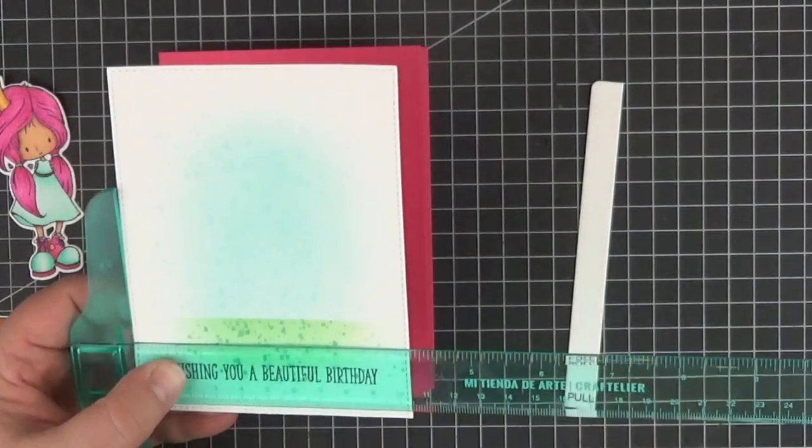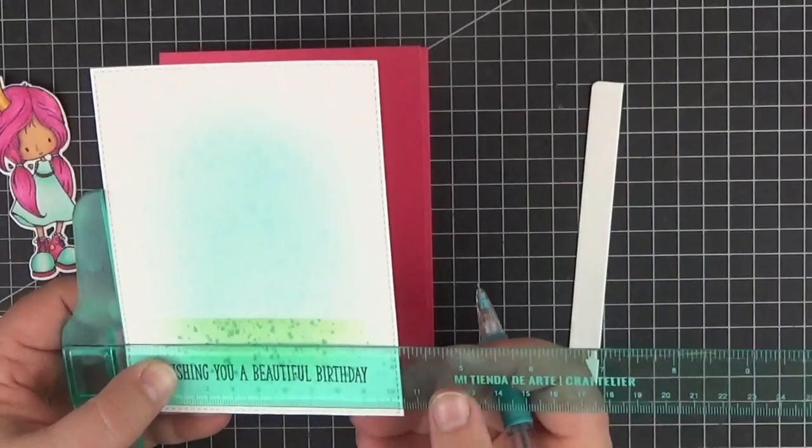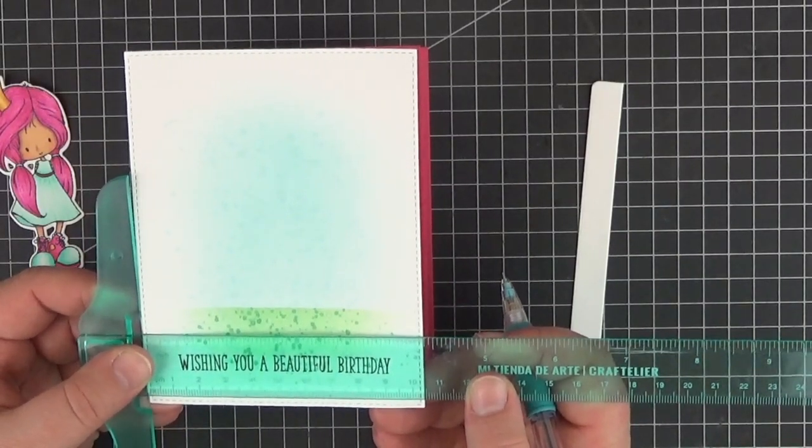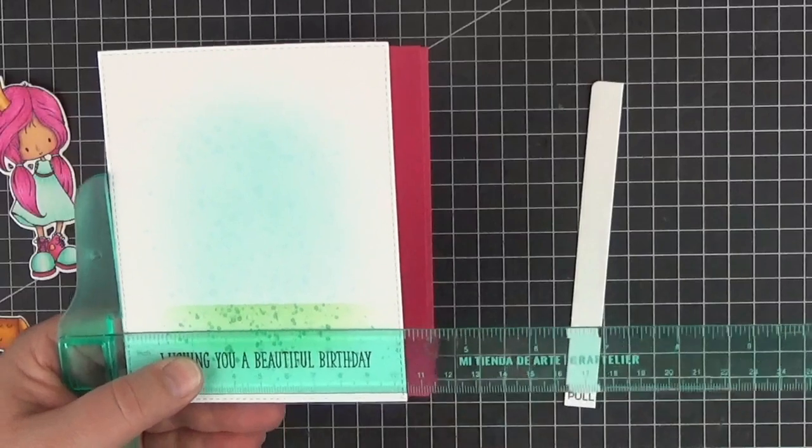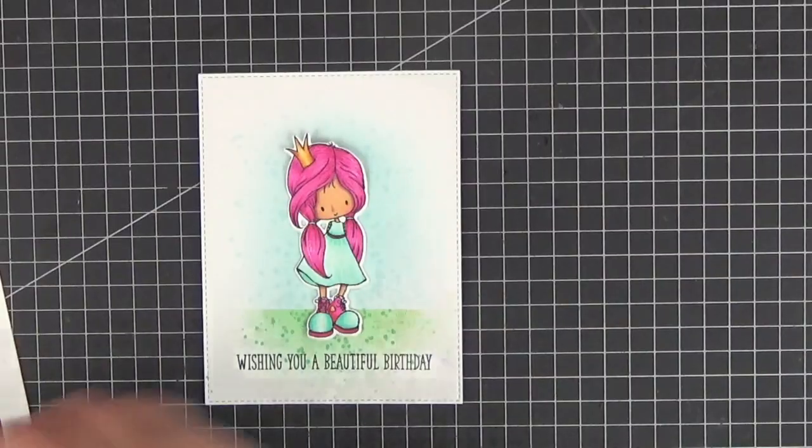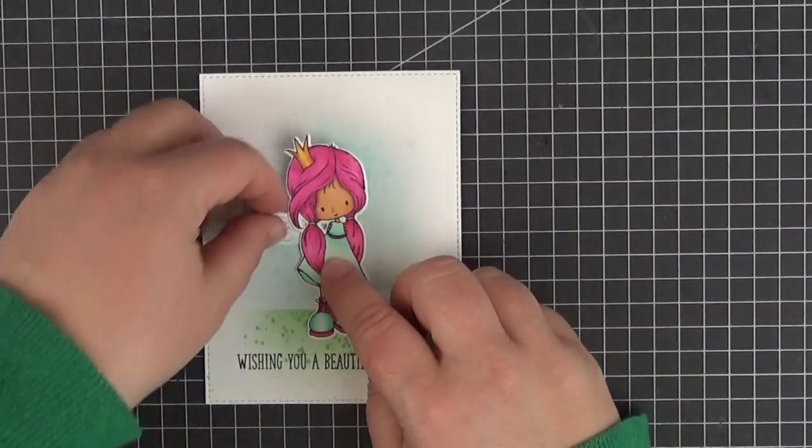I did some really simple ink blending on a panel cut with the largest die from the stitched rectangle stacks dynamics with Summer Splash and premium die inks. Now I'm lightly marking the center on both sides so that I can cut a slit for the mechanism.